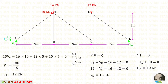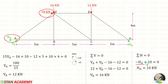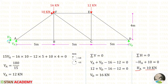Now let us apply the rule sigma H equals 0 and find HA. Let us assume that HA is acting towards the left side, so that will be negative. In this truss there is only one horizontal load, 10 kilo newton, acting towards the right side, so that will be positive. Finally, HA equals 10 kilo newton positive, meaning our assumed direction is correct — HA is acting towards the left side.